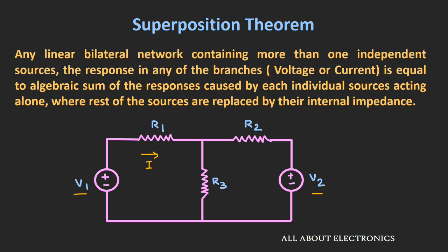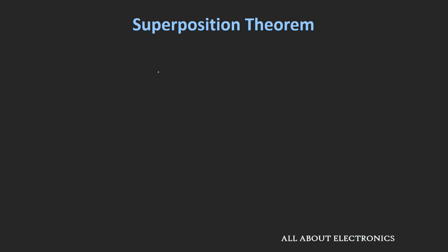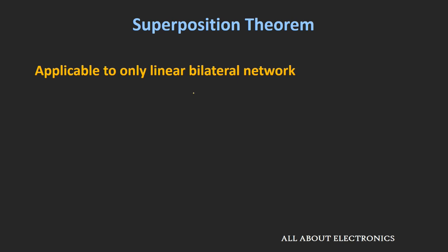In the theorem statement, we are considering a linear bilateral network, so this superposition theorem can be applied only to linear and bilateral networks. If you don't know about linear and bilateral networks, you can check the video on the classification of electrical networks — the link is provided in the description below. This superposition theorem is only applicable for linear and bilateral networks.